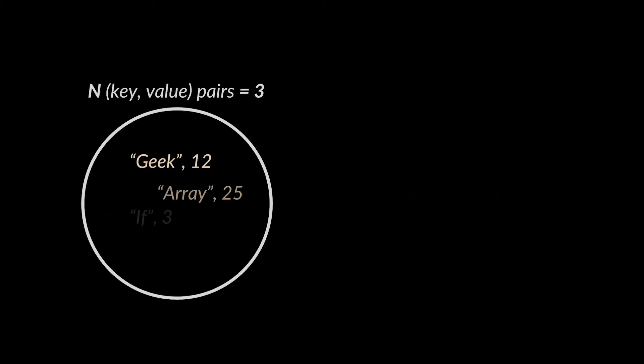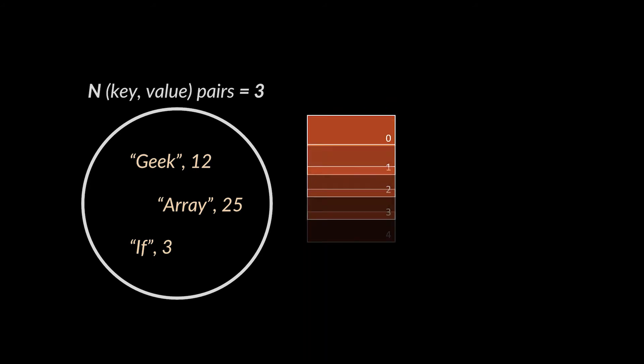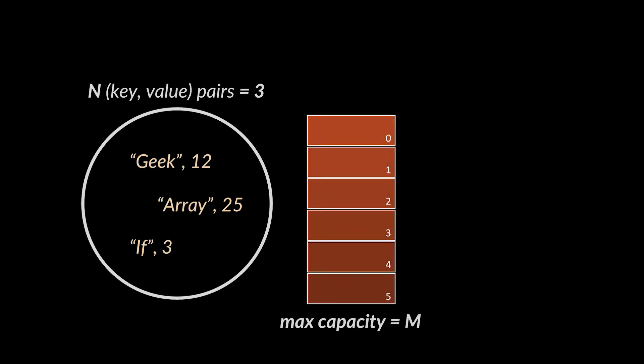Let's take this set of n string keys for example, where n equals 3, and try to insert them alongside their corresponding values in this array where we can put at maximum m elements, m being 6 in this case. We are going to do this using the hashing function you can see in front of you. It is a pretty simple one, all it does is return the length of the string we passed to it.